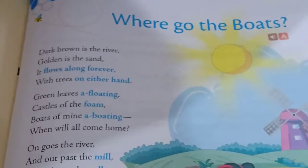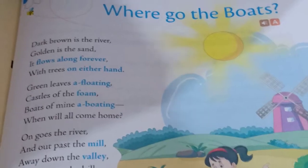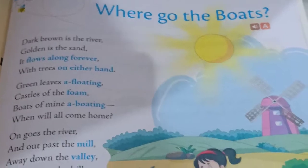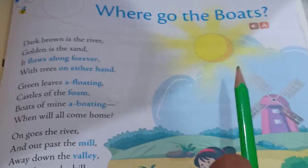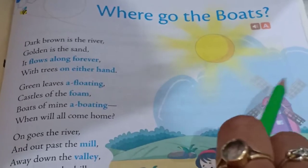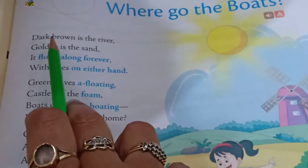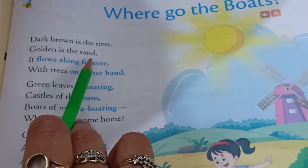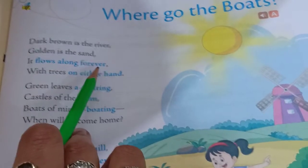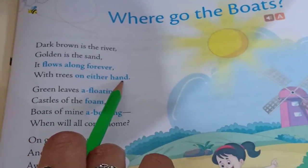How will you start in the exam? When I ask you to recite a poem, first of all put your hands at the back, and then tell the topic of the poem — that is, 'Where Go the Boats.' Then you will start the poem: Dark brown is the river, golden is the sand, it flows along forever with trees on either hand.